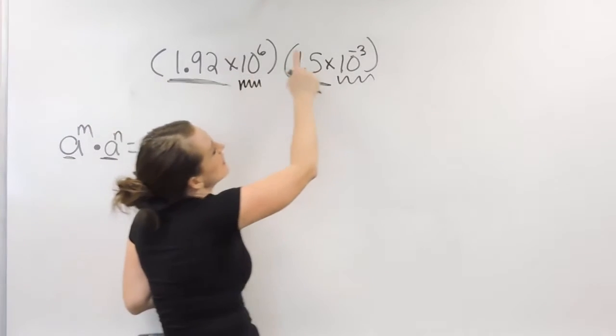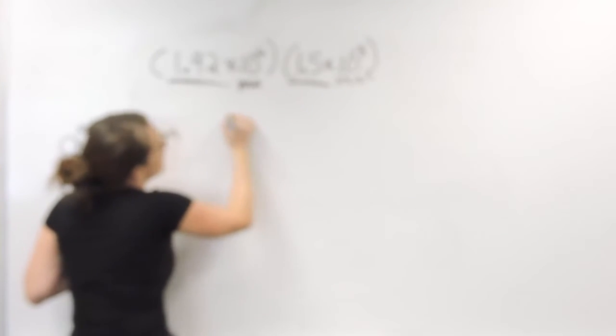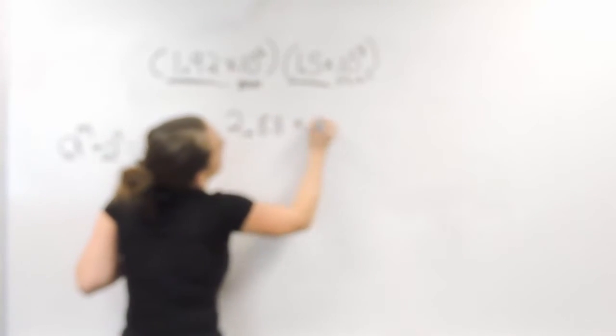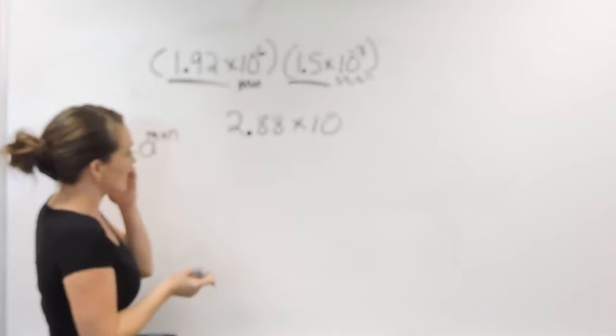All right, so let's take care of this. So 1.92, number times number, 1.92 times 1.5, that gives us 2.88. Times 10 to some power, that's what scientific notation is going to look like there.